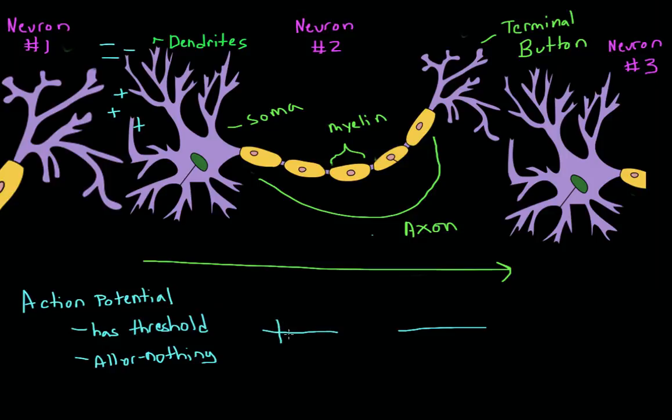So for a dim light, we might have a few action potentials. But for a really bright light, we might have more. And they'll all be the same size, there will just be more of them. And so that's the way that the neurons code intensity. Not through size of action potential, but through frequency of action potential.